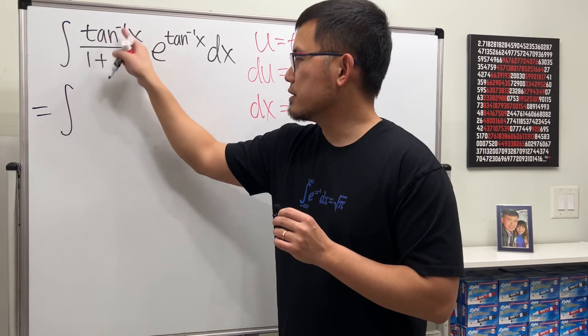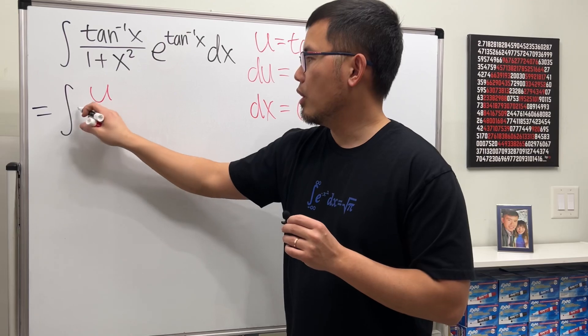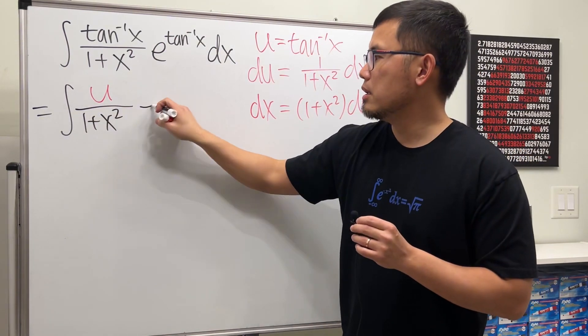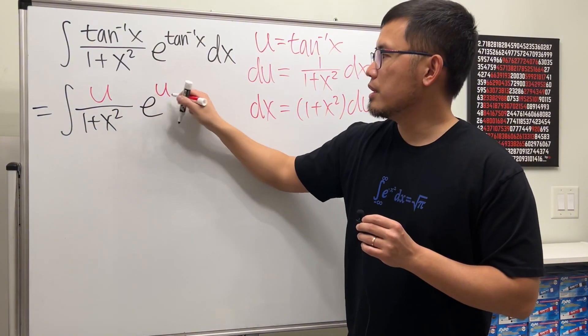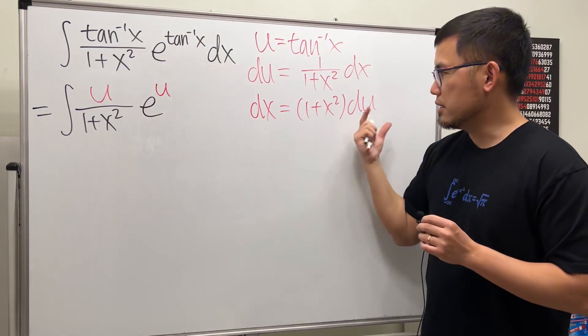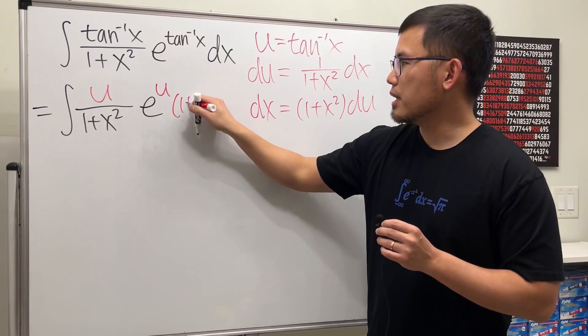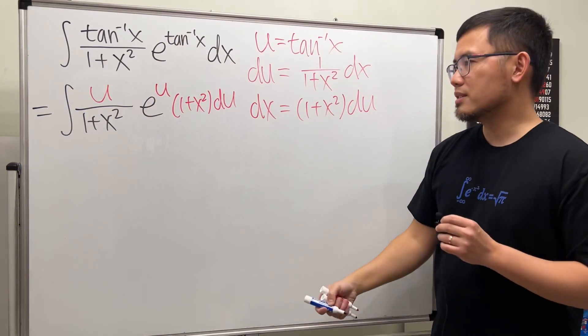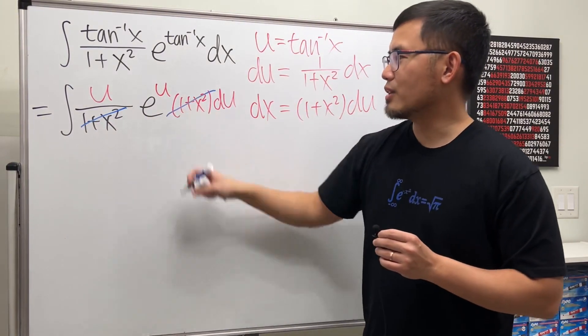Now we can take this integral from the x world to the u world. Have a look here. We have the integral inverse tangent of x is the u, over that 1 plus x squared, and then e to the u.